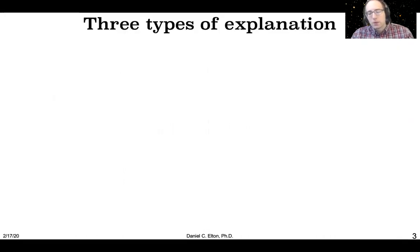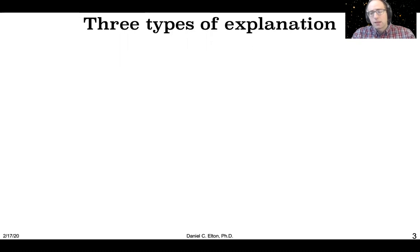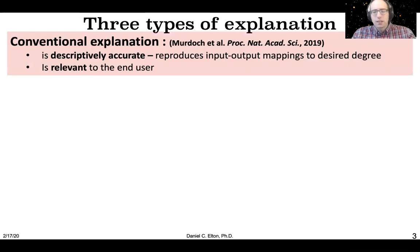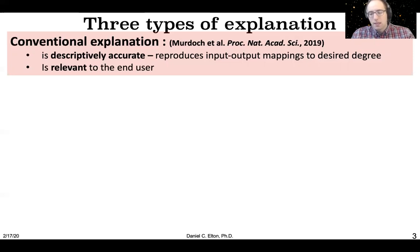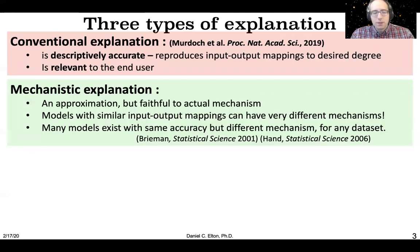When people talk about explanation, they have many different things that they mean and many different motivations for doing it. I find it useful to make a distinction between two different types: conventional explanations and mechanistic explanations. Conventional explanations are just trying to approximate the input-output mappings of the model, and they usually are verbal descriptions which are tailored to be relevant to the end user — couched in the terminology of whatever domain the end user is in.